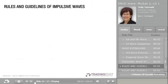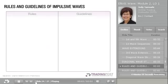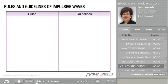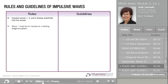And now for some rules and guidelines of impulse wave structures. There are rules and there are guidelines. The rules: 1. Impulse waves 1, 3, and 5 always subdivide into 5 waves. 2. Wave 1 must be an impulse or a leading diagonal pattern. 3. Wave 2 never goes beyond the start of Wave 1.